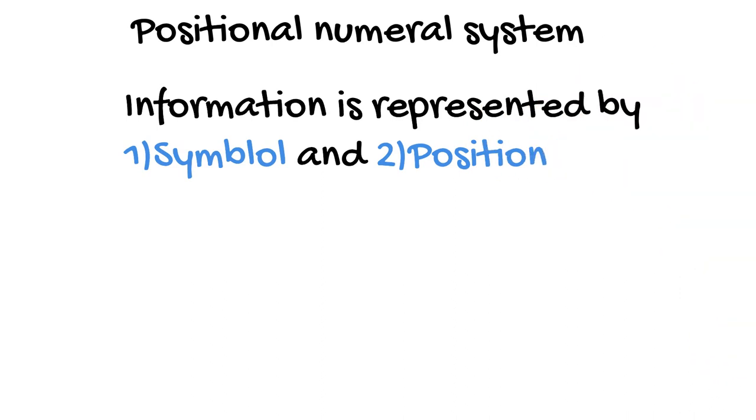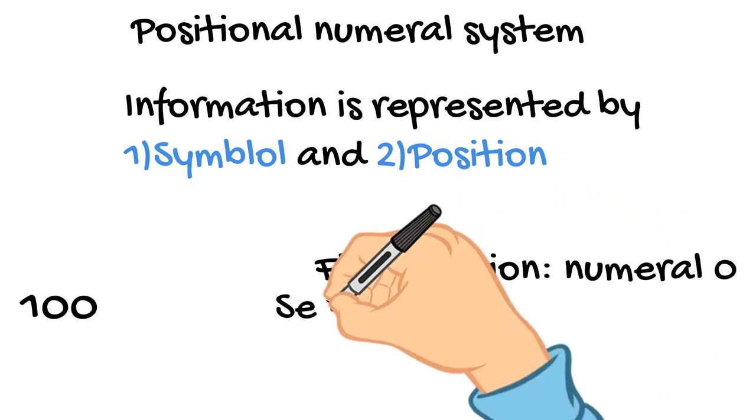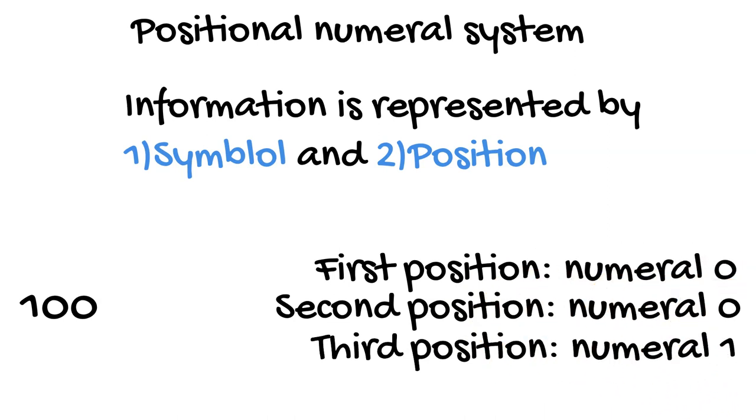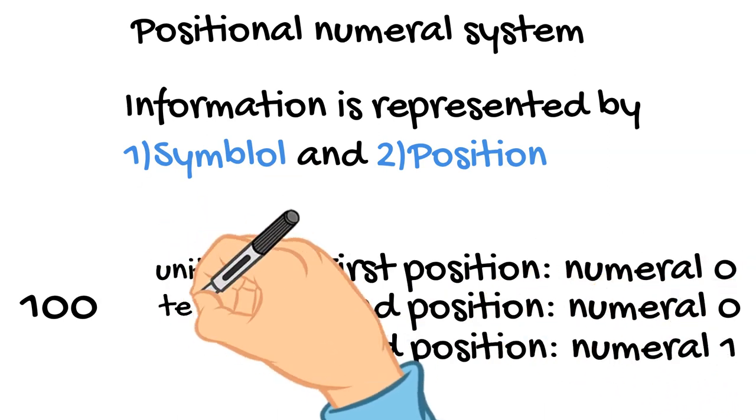Let's take a short look at an example. We have the number 100. Here we have the first position numeral 0, the second position numeral 0, and the third position numeral 1. These positions are commonly known as units, tens, and hundreds.